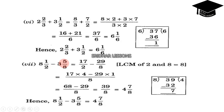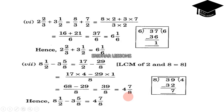Next: 8 and half minus 3 and 5 by 8. Converting: 8 and half equals 8 into 2 plus 1, that is 17 by 2. And 3 and 5 by 8 equals 3 into 8 plus 5, that is 29 by 8. LCM of 2 and 8 is 8. So 2 cancels 8 four times: 17 into 4 minus 29 into 1 gives 68 minus 29 by 8, equal to 39 by 8. Dividing: 8 into 4 is 32, remainder is 7. Hence 8 and half minus 3 and 5 by 8 equals 4 and 7 by 8.